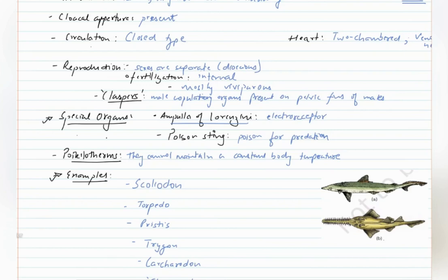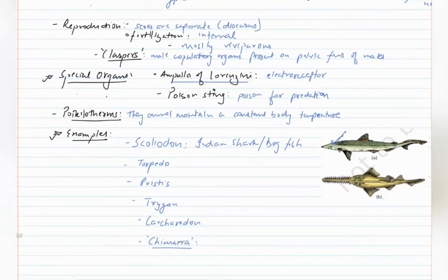In examples we have Scoliodon which is known as Indian shark or dogfish. Prystis is known as sawfish. You can see the mouth has saw-like serrations. Trigon is known as stingray. It has a poisonous sting.